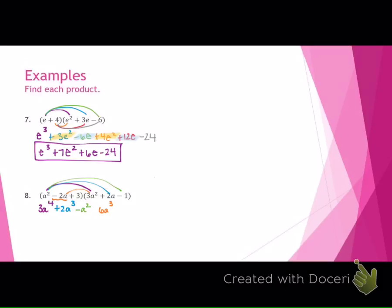Distribute the negative 2A to 3A squared, and that is negative 6A cubed. It's not positive, it's negative. Negative and a positive is a negative. Then what? Let's distribute the negative 2A to the 2A, which is negative 4A squared. And then negative 2A to negative 1, which is positive 2A. Are we done yet? No. Now what? 3 to 3A squared, which is 9A squared. And then 3 to 2A, which is 6A. And then 3 to negative 1, which is negative 3.